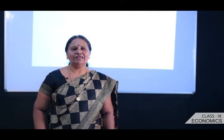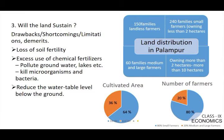Regarding land sustainability, the drawbacks include loss of soil fertility, excess use of chemical fertilizers that pollute groundwater, lakes, and kill microorganisms and bacteria, and a reduction in the water table level below the ground. Now let us enter into the very important aspect of land distribution in Palampur.